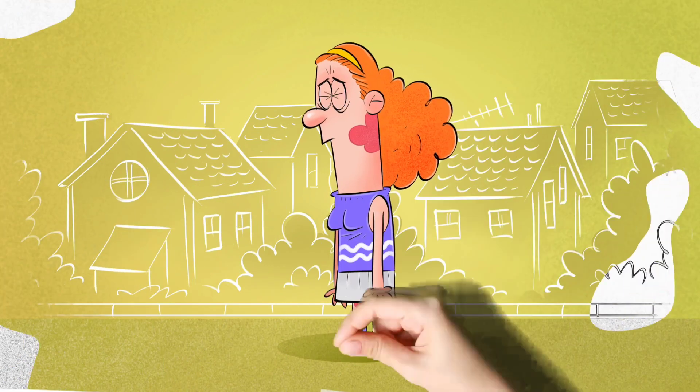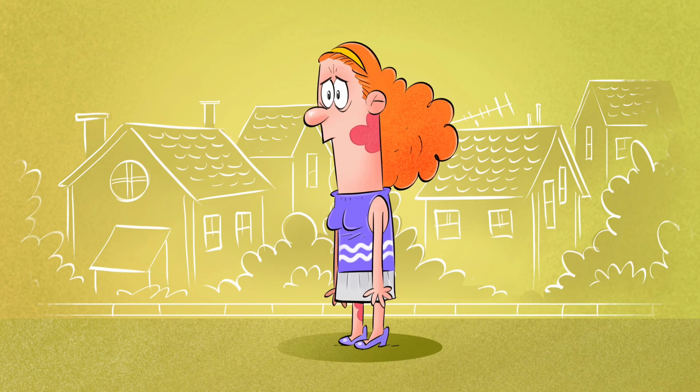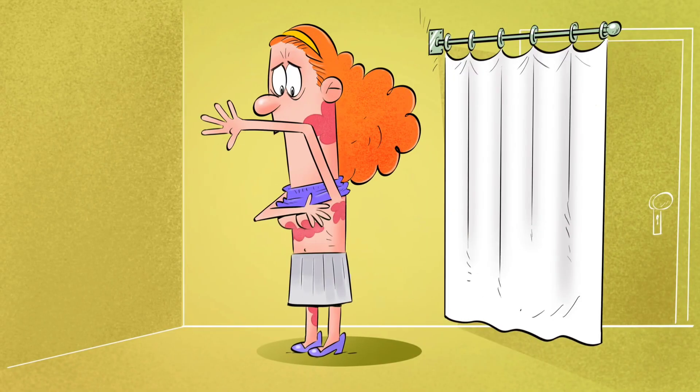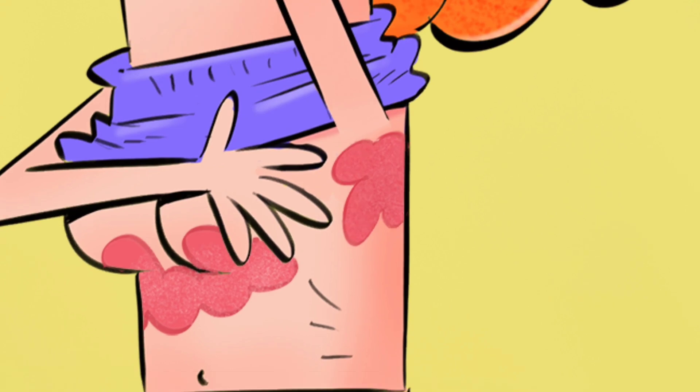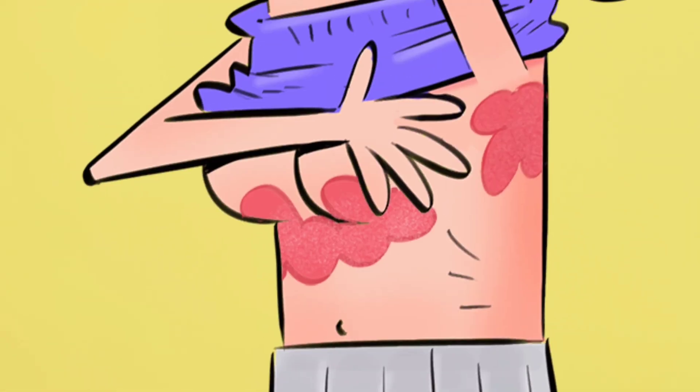Of course, there are also other types of psoriasis. For example, there is a type that is characterized by red inflammation with a slight crust and affects the armpits, groin, areas under the chest and behind the ears.